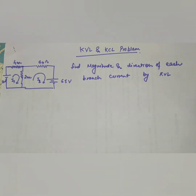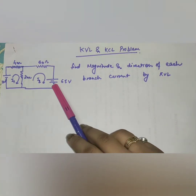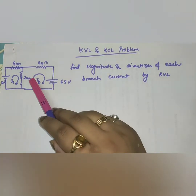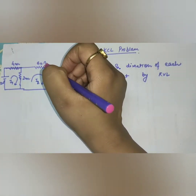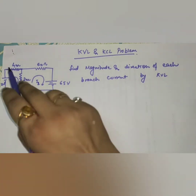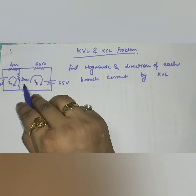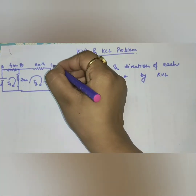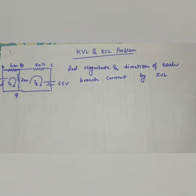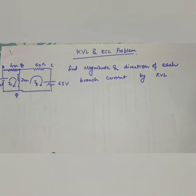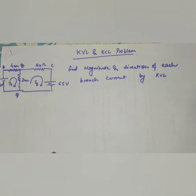For our first numerical, we have to find the magnitude and direction of each branch current. The branches are branch 1, branch 2, and branch 3. A branch is where any element is present — branch 1 is the 40 ohm branch, branch 2 and 3 follow. We mark nodes A, B, C, and D. So AB is a branch, BD is a branch, and BC is a branch.